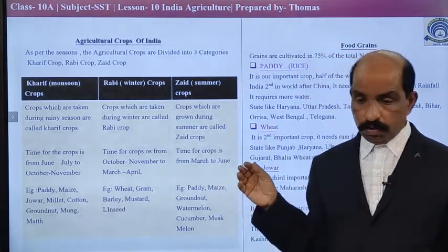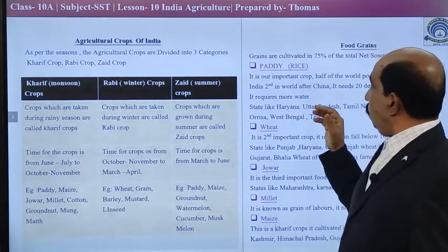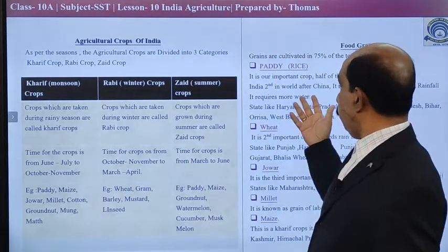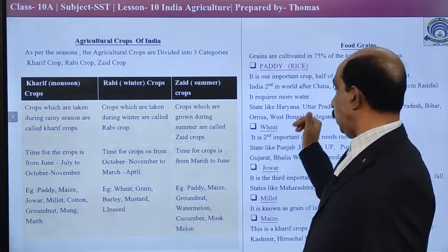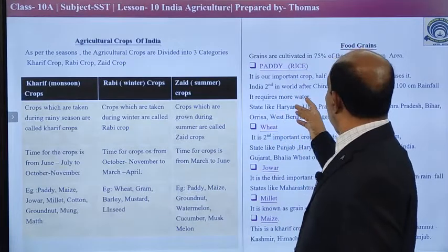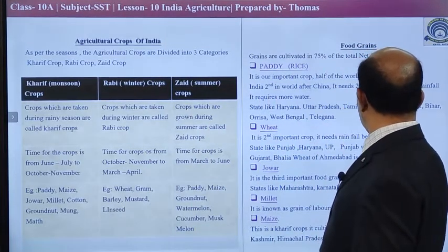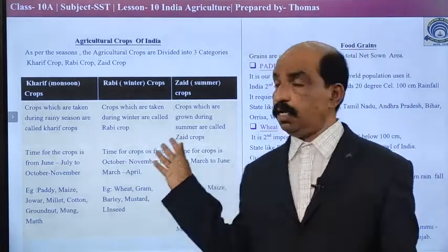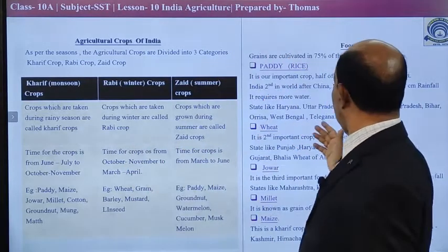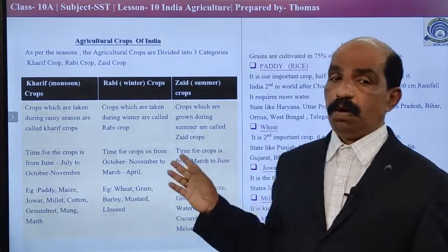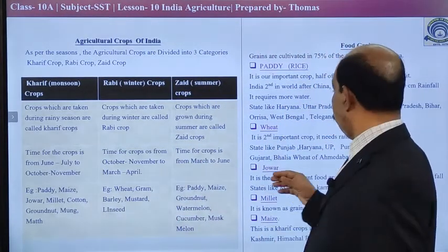Now let us talk about some important agricultural products of our country. Paddy — the maximum area of our land is devoted to cultivation of paddy, which means rice. India is the second biggest producer of rice after China, and maximum people in India eat rice as their staple food, especially in coastal areas. China is the leading producer of rice in the world. Haryana, Uttar Pradesh, Tamil Nadu, Andhra Pradesh, Bihar, Orissa, West Bengal, and Telangana — all these states have cultivation of paddy or rice. Rice needs a temperature of 20 degrees and above and also more than 100 centimeters of rainfall. If irrigation facilities are available, we can cultivate paddy three times a year.